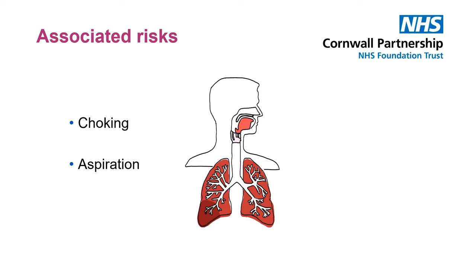Dysphagia can lead to increased risk of choking and aspiration. Choking occurs when the airway is blocked, meaning that the person is unable to breathe. A choking episode could require back slaps and abdominal thrusts. Please refer to your employer's specific policy on choking and management of these incidents. Aspiration refers to the entry of food, fluid or saliva into the airway and down to the lungs. Aspiration can, but not always, result in severe chest infections and aspiration pneumonia.